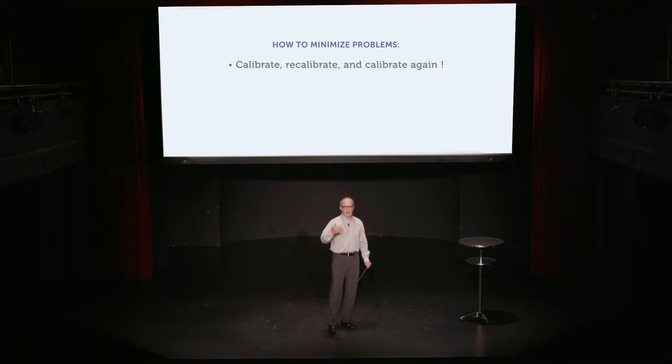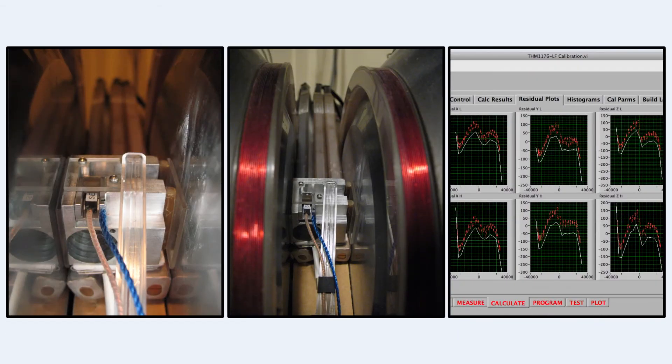You also need to calibrate at at least two temperatures to compute the temperature coefficients of both the gain as well as the offset, because both of those will vary with temperature. Two or three-axis sensors require calibration on each of the axes, plus additional measurements to determine any angular errors.